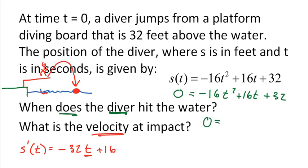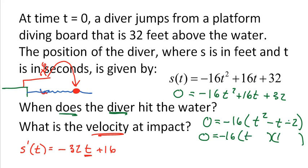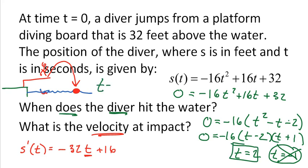When the diver hits the water, his height is zero. So I set the position function equal to zero and solve for t. I can factor out a negative 16, leaving t squared minus t minus 2. Factoring gives negative 16 times t minus 2 times t plus 1. So t could be 2 seconds or t equals negative 1 second. Since this is a real-world problem, you cannot have negative time — so the only answer is 2 seconds. It takes 2 seconds for the diver to jump and hit the water.